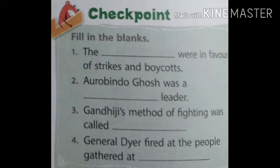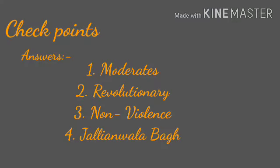Second point: Aurobindo Ghosh was a blank leader. And the answer is revolutionary leader. Third point: Gandhiji's method of fighting was called blank. And the answer is non-violence. Fourth point: General Dyer fired at the people gathered at blank. And the answer is Jallianwala Bagh. Children, you can check your answers from here.